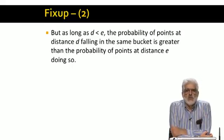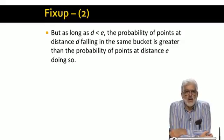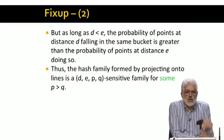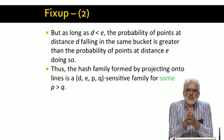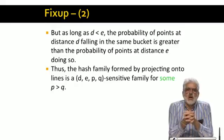But we were being overly pessimistic. In fact, as long as d is less than e, we know that the probability that points at a larger distance d have a better chance of falling into the same buckets than do points at a larger distance e. As a consequence, we know that for any d and e with d less than e, the hash functions based on lines and bucket size a is a d, e, p, q sensitive family for Euclidean distance.